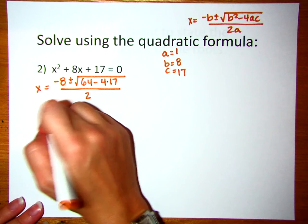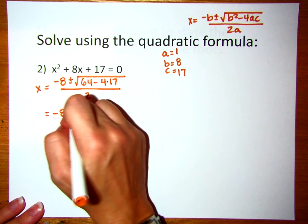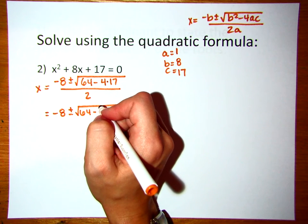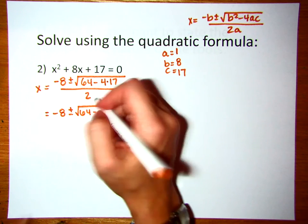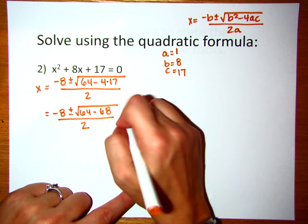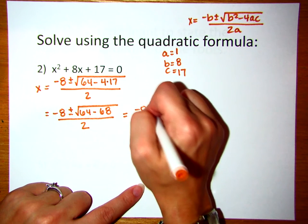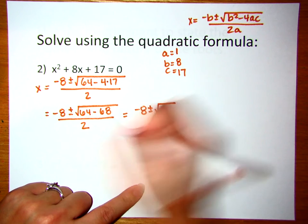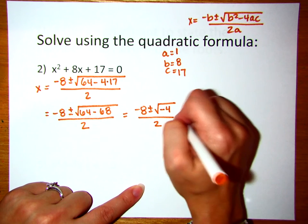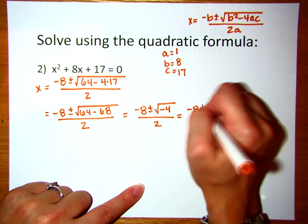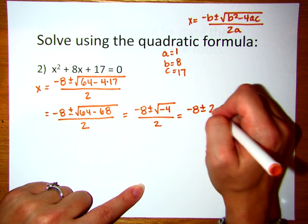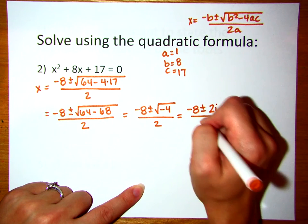We're going to work with the discriminant again. Negative 8 plus or minus the square root of 64 minus — we want to do 4 times 17, which gives us minus 68 — all over 2. Continuing, negative 8 plus or minus the square root of 64 minus 68, which is negative 4, all divided by 2. The square root of a negative gives us an i, and the square root of 4 is 2, so this makes 2i. All that divided by 2.